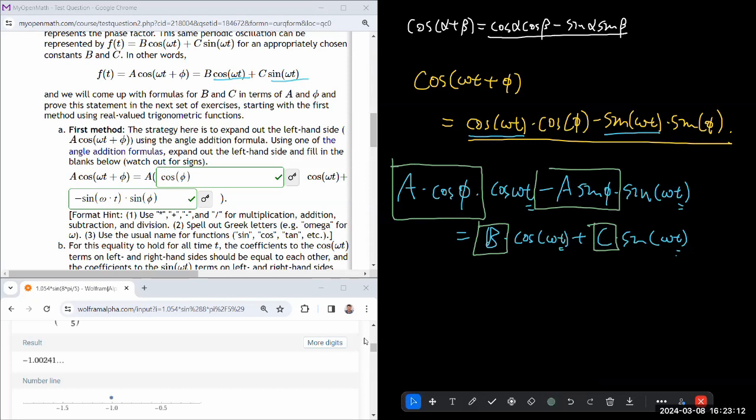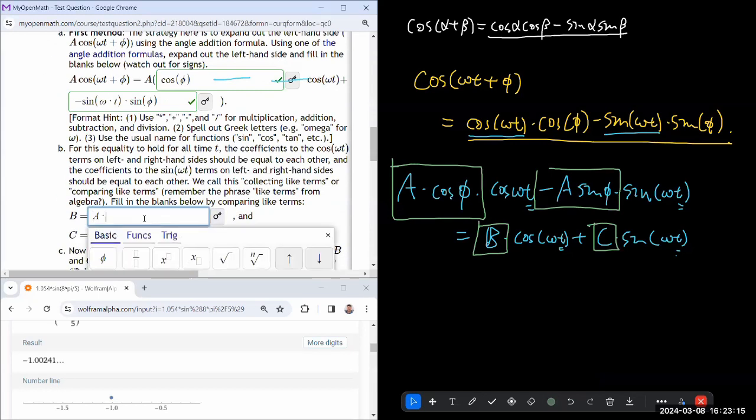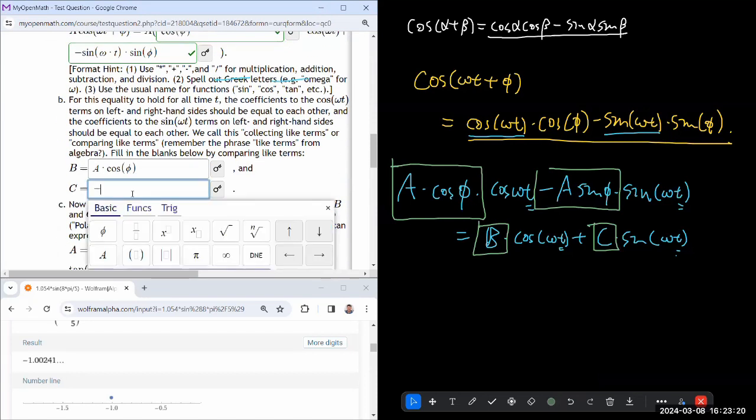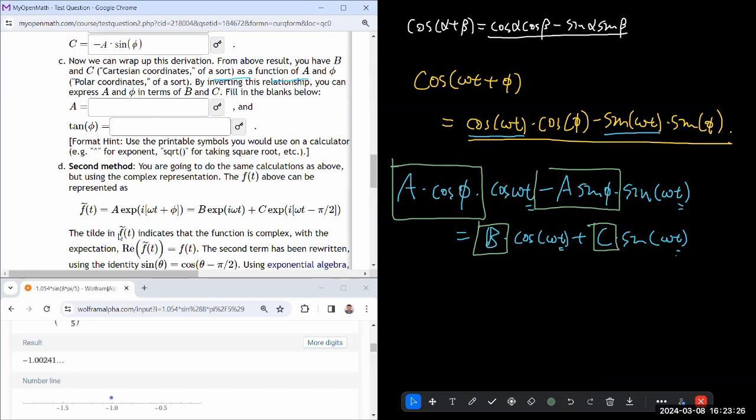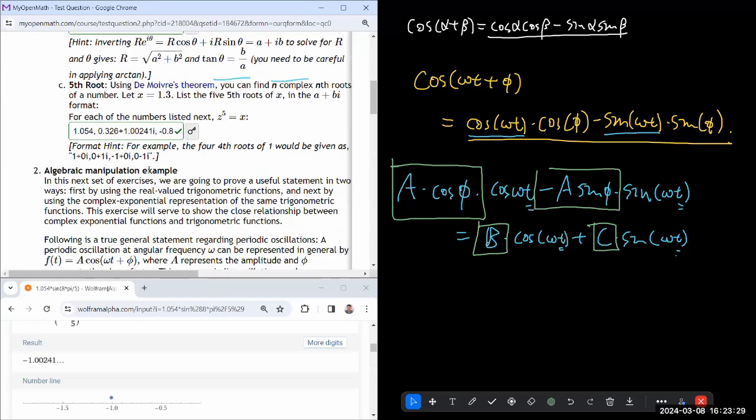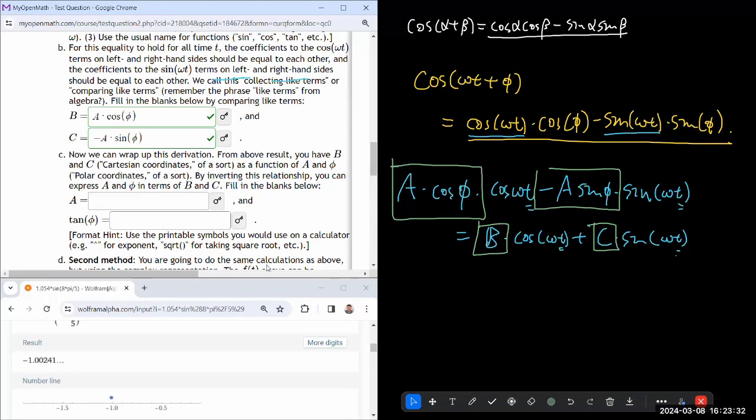Once you're setting the bar that high, what you need to happen is this coefficient must equal that coefficient, and this coefficient must equal that coefficient. I think that's our answer for B and C. B should be A times cosine of phi, and C should be minus A times sine of phi. Now we can wrap up this derivation.